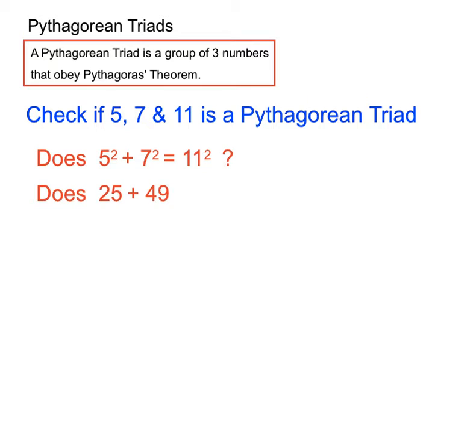5 squared is 25. 7 squared is 49. 11 squared is 121. And on the left-hand side, that adds up to 74. On the right-hand side, I'm a little uncomfortable saying that 74 equals 121. It doesn't, mathematically, does it?